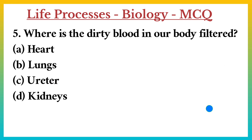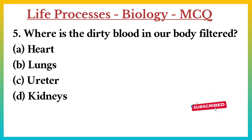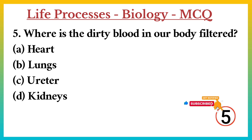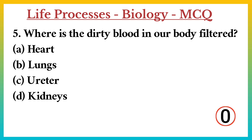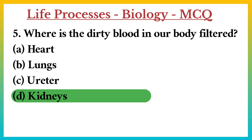Question number 5. Where is the dirty blood in our body filtered? A. Heart. B. Lungs. C. Urethra. D. Kidneys. Answer: D. Kidneys.